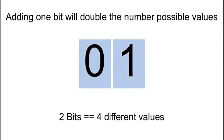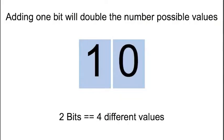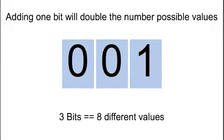Now every time that you add an extra bit, you actually double the data storage. So with one bit, you can represent only two values. But with two bits, you can represent four values. Three bits, you can represent eight values, and so on.